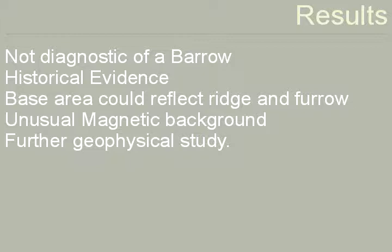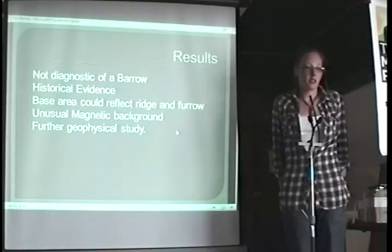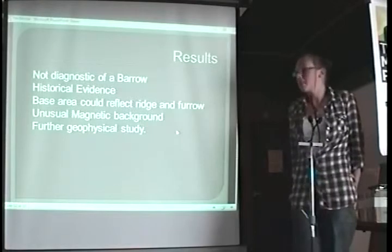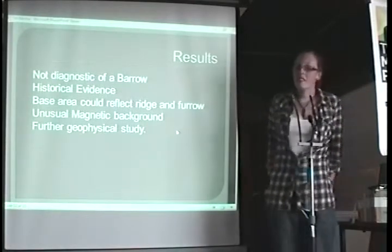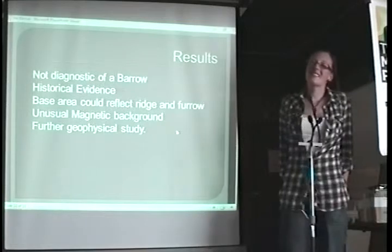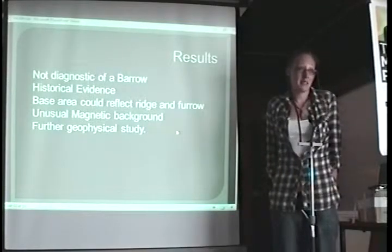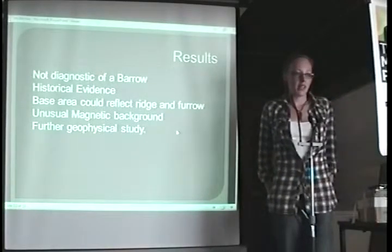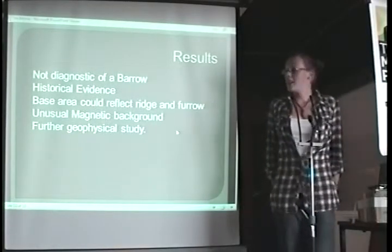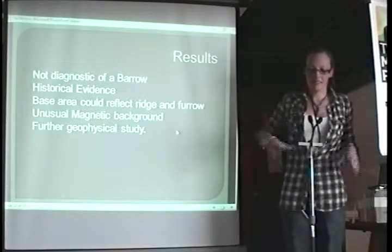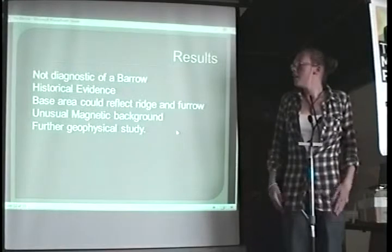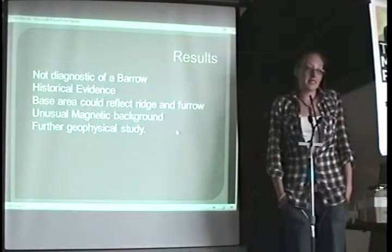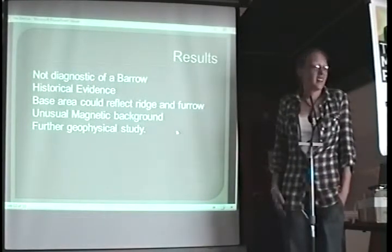So again, just to cover it, the results that we had are not diagnostic of a barrow, but that doesn't necessarily mean that it's not. It just means that the characteristics that are shown in the resistivity results don't match those that I'm familiar with as being with barrow. The historical evidence suggests that there's a possibility that it isn't a barrow. Mainly from Tristram, as he put in the slot, he said that the mound was chiefly comprised of clay, and there's no fines within it. The base area, which had the slightly higher resistance area, could reflect the ridge and furrow, which is across the site from general wearings there, really.